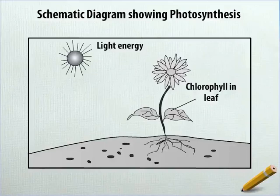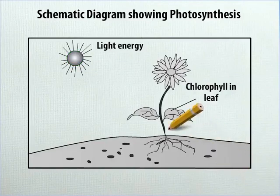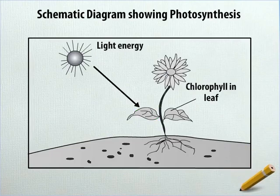Next, from the circular structure, draw an arrow pointing towards the left leaf of the plant.